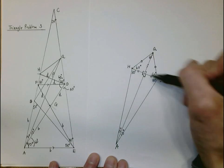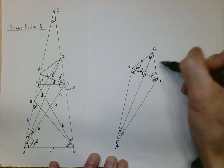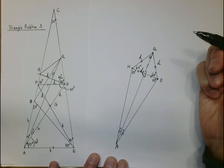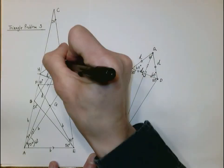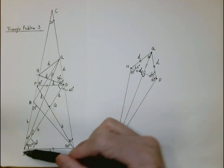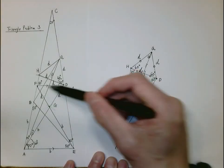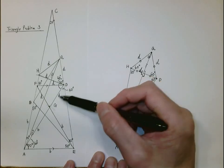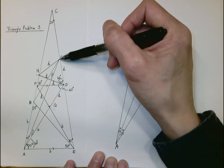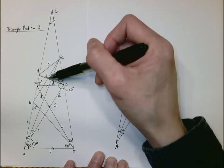We know that from H to D is small d, so QD and QH are small d as well. To summarize so far: we have one equilateral triangle with sides d, d, d, and we have just shown this is also an equilateral triangle with sides small d, small d, and small d.